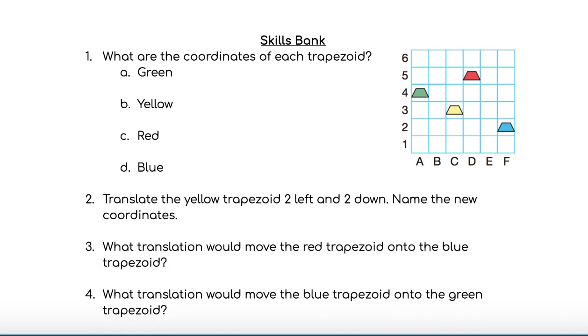For question 4, what translation would move the blue trapezoid onto the green trapezoid? We can see that the blue trapezoid is here, so it would need to travel across and then up. Be sure to specify how far and in which direction.